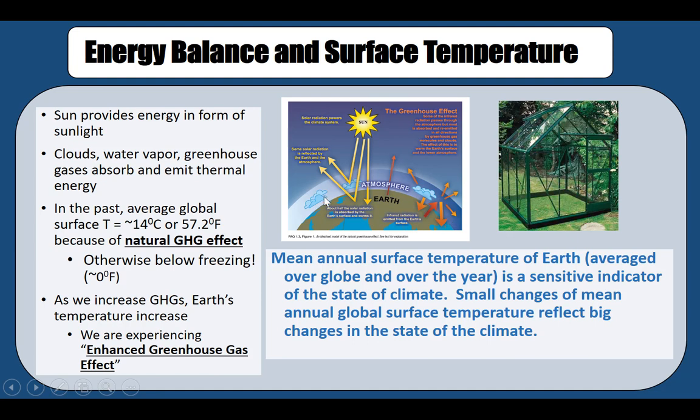Another way to think about it is like our body: we use clothing, and when it gets colder we use more clothing, or at nighttime we cover our body with a blanket. The purpose of the blanket, especially in colder times, is to keep body heat close to the body so we feel warmer. Greenhouse gases work the same way — it is a blanketing mechanism of the earth that retains heat close to the earth and keeps it warmer.